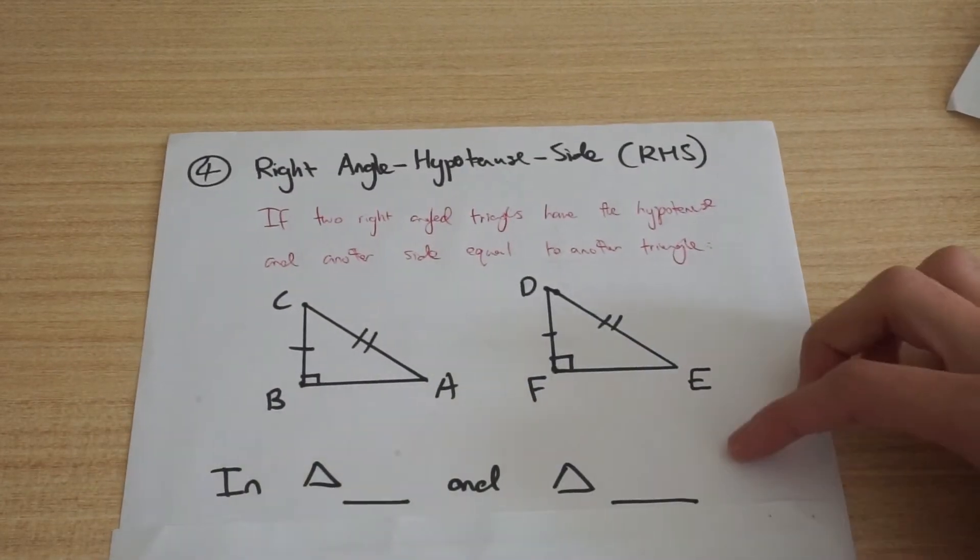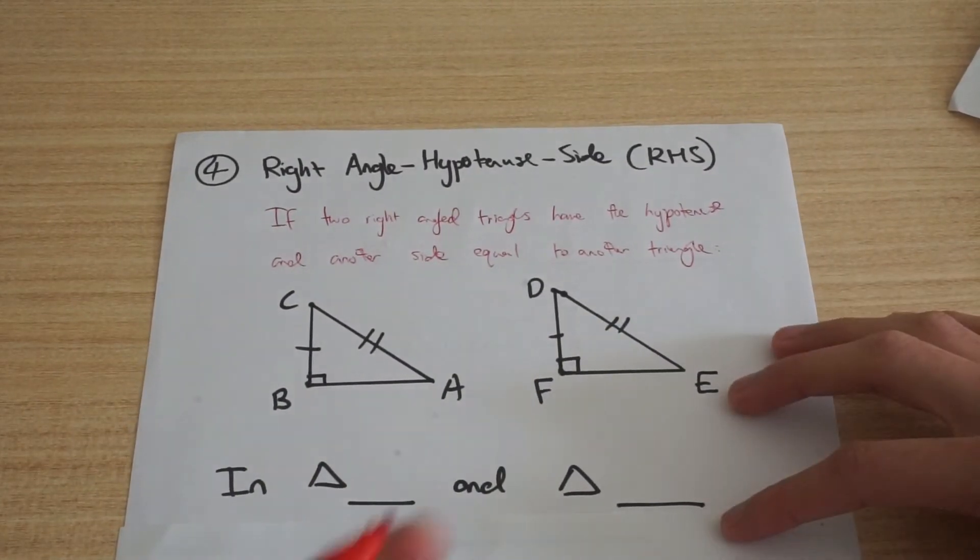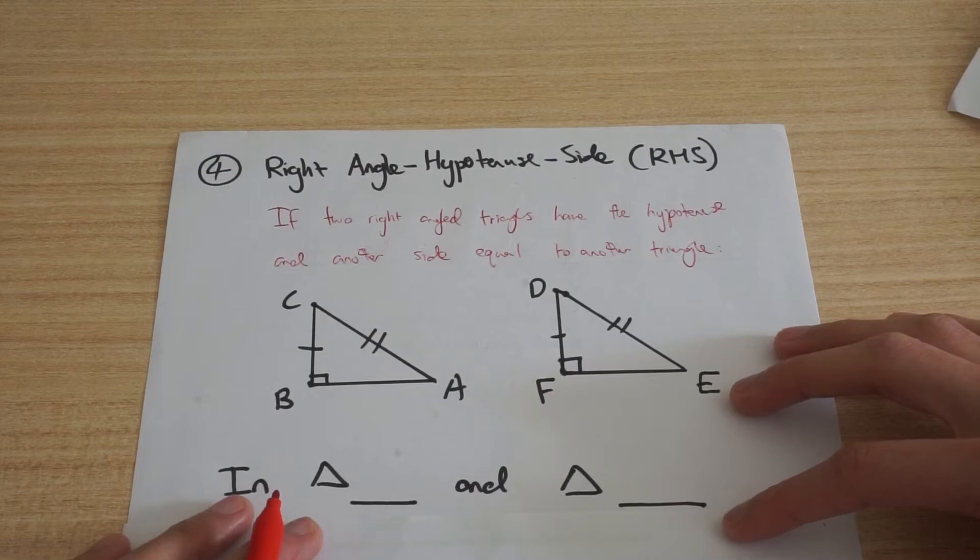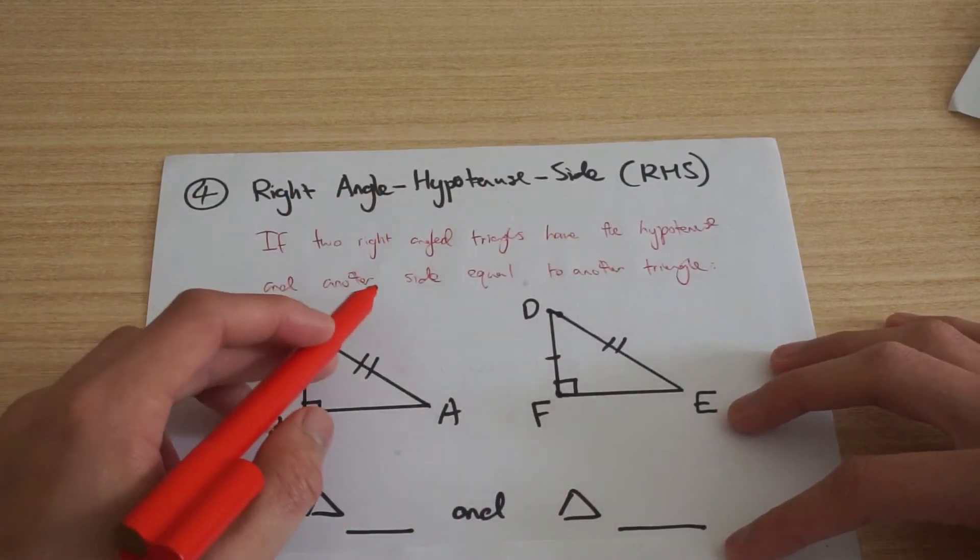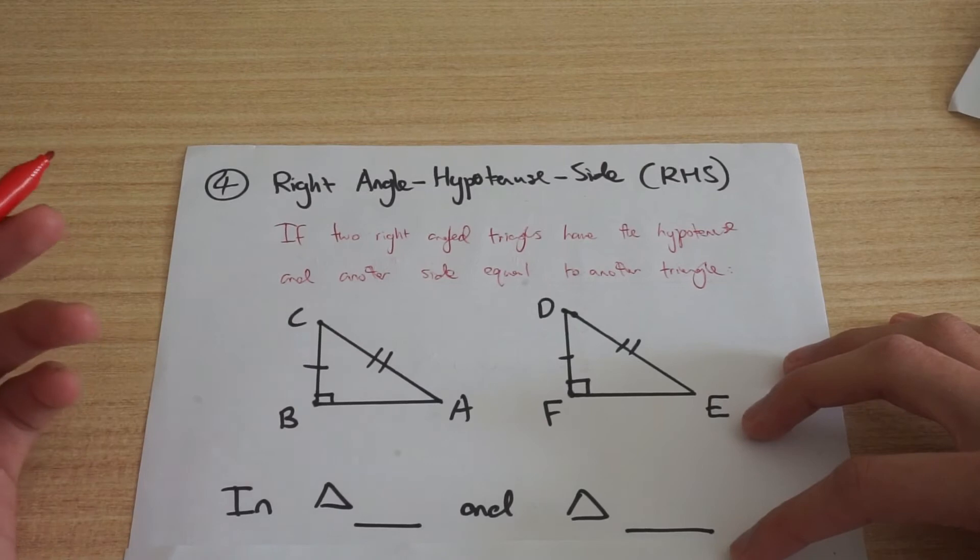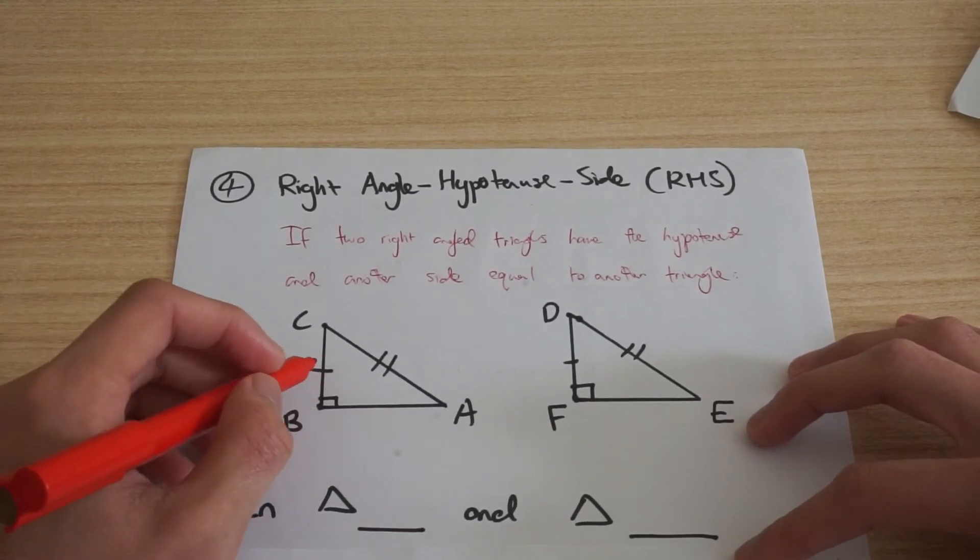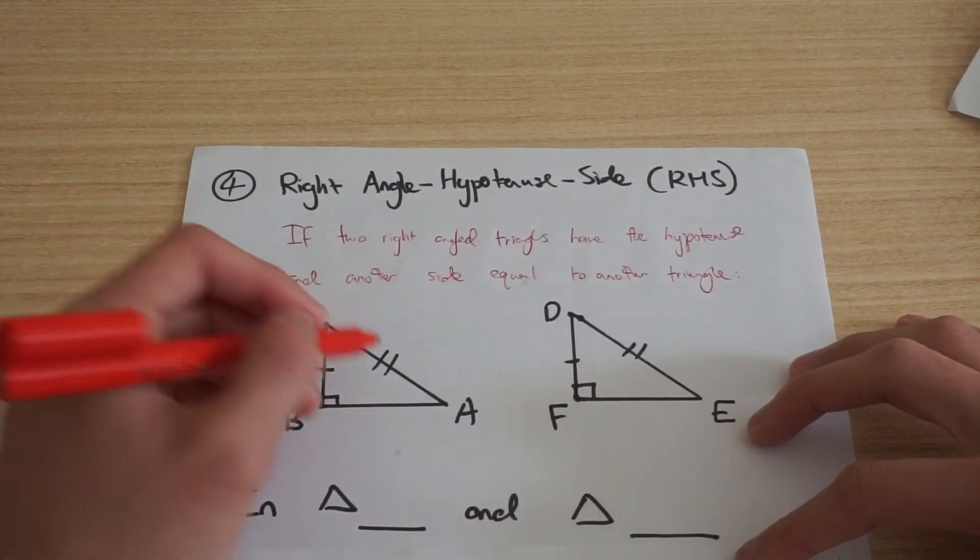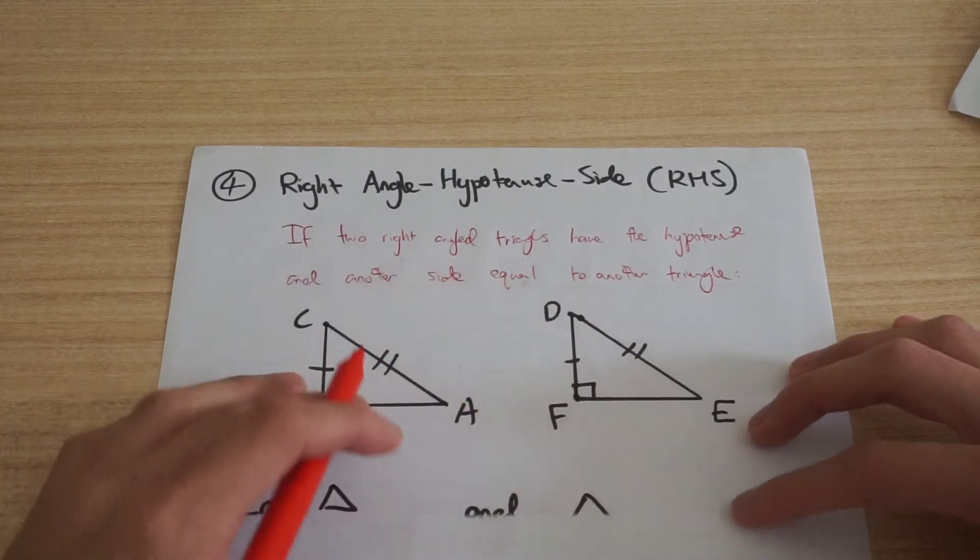Last one, right angle hypotenuse side. So when you have two right angle triangles and they have the hypotenuse and another side equal, then they're congruent and you can see you have that here. You've got a side and a side that's equal. You also have the hypotenuse that's equal.